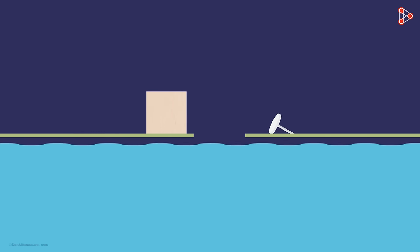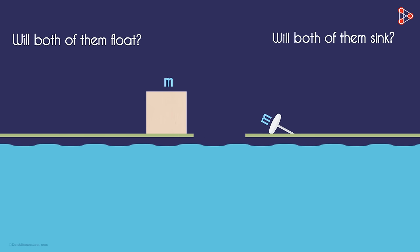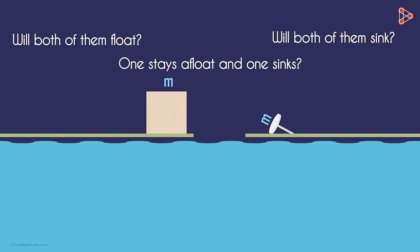This is the example we left at in the previous video. If we drop a piece of balsa wood and a metal pin of the same mass into the water, what will happen? Will both of them float or will both of them sink? Or one stays afloat and one sinks?